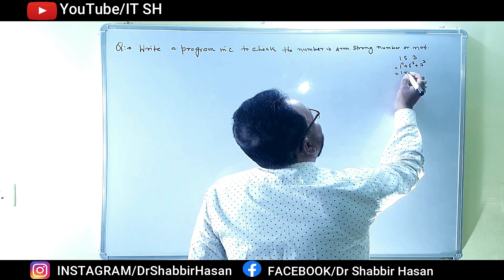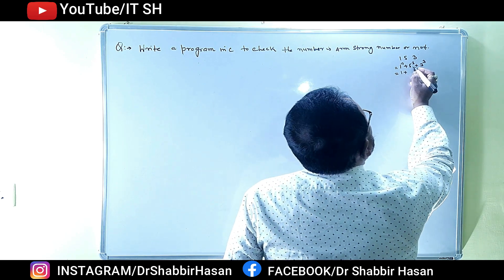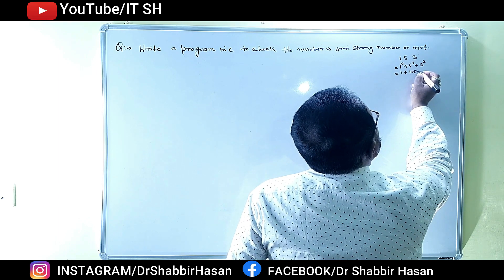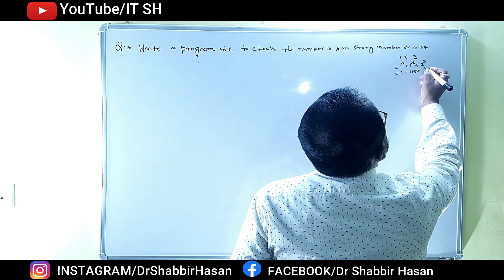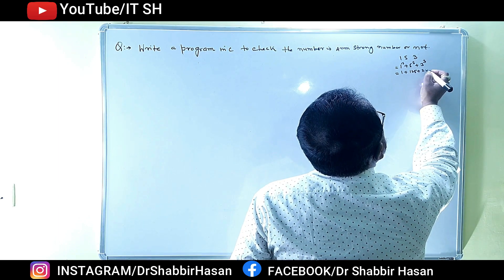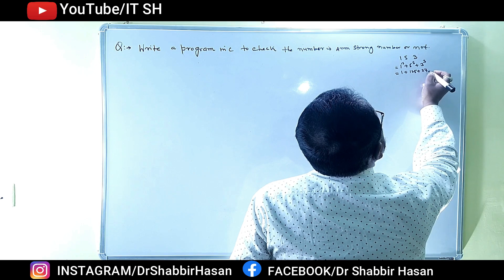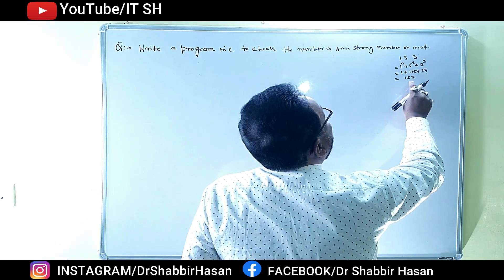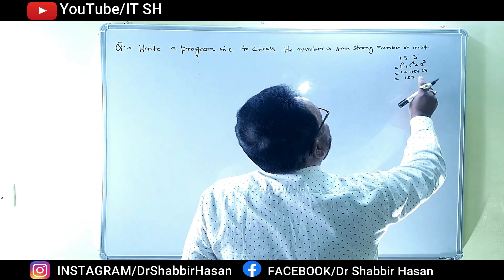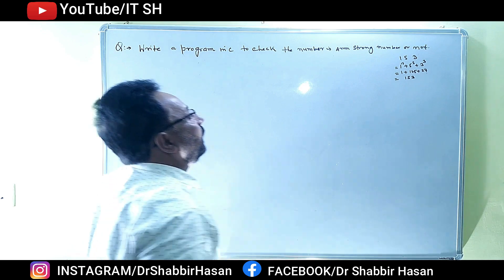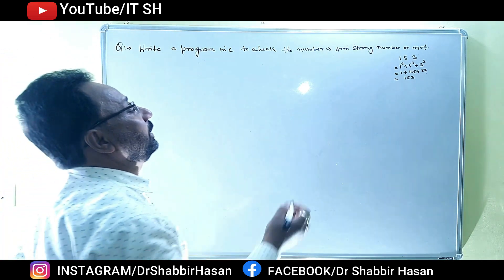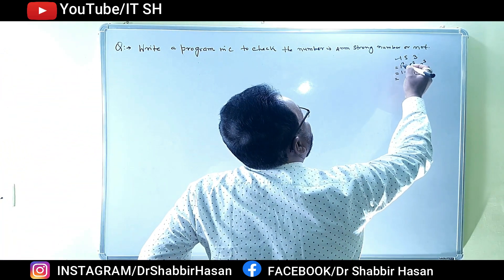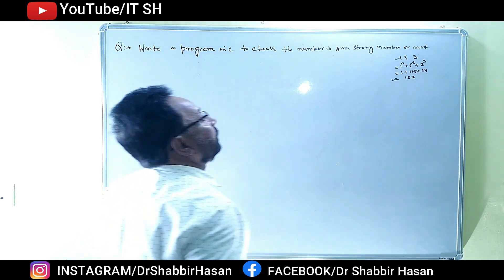तो 1 का cube = 1, 5 का cube = 125, और 3 का cube = 27। ठीक है? अब इनको जोड़ेंगे तो क्या आएगा? 153। ठीक है? तो ये 153 और ये 153 दोनों बराबर होंगे। ठीक है?